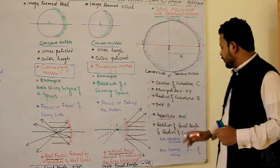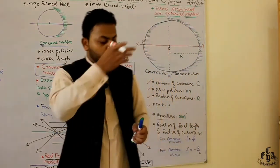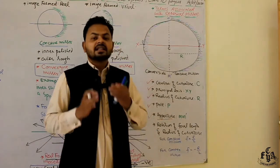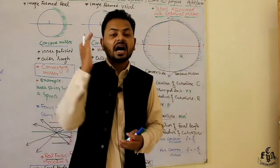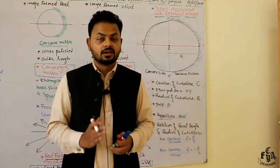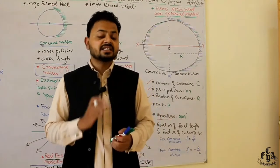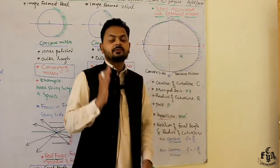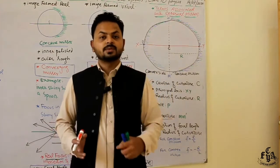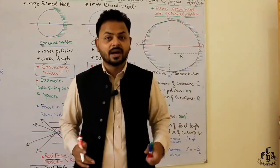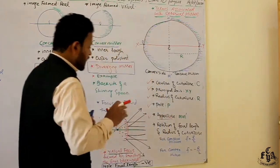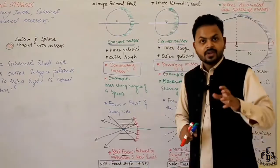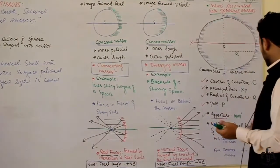The relation between focal length and radius of curvature: focal length is half of the radius of curvature. For a concave mirror: f = R/2. For a convex mirror: f = −R/2. That is all about today's lecture.